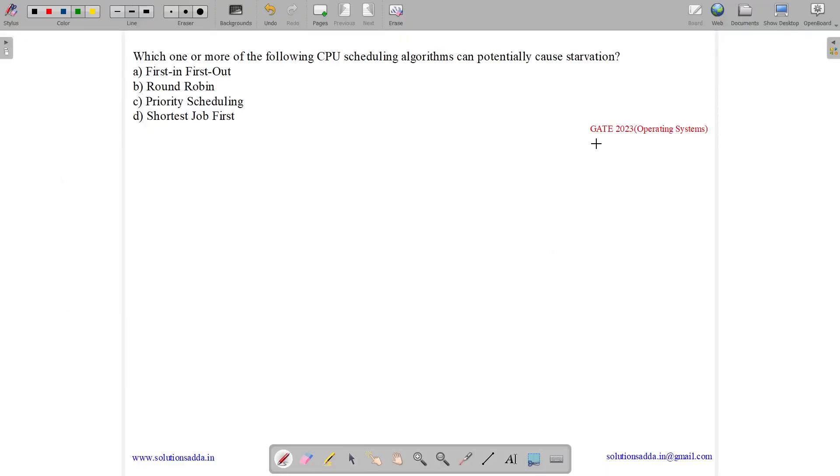This question belongs to operating system subject and was asked in GATE CSE 2023. The question states, which one of the following CPU scheduling algorithms can potentially cause starvation: first-in-first-out, round-robin, priority, or shortest job first.